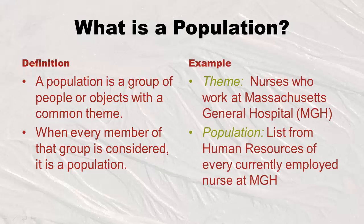For example, the theme could be nurses who work at Massachusetts General Hospital. The population would then be the list from human resources of every nurse currently employed at MGH. It really depends on how you define the theme — I could say nurses who belong to the American Nursing Association, or nurses who live in New Orleans. Once you describe the theme, the population is every single individual in it.